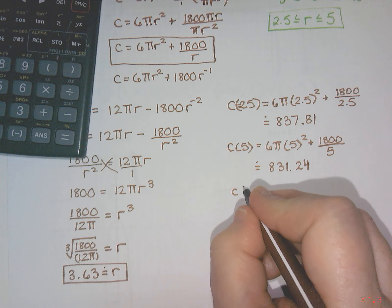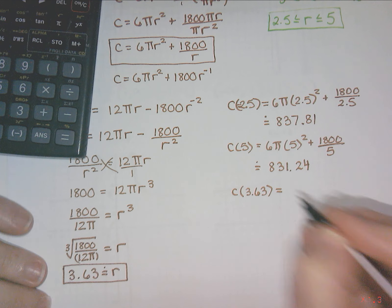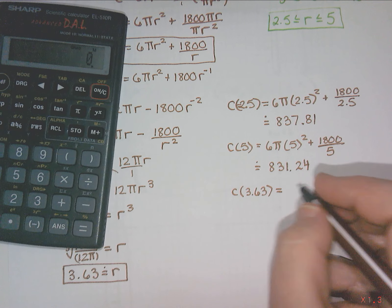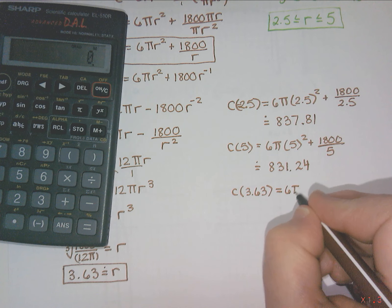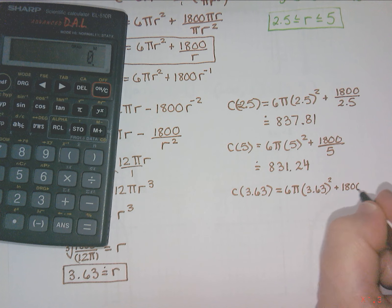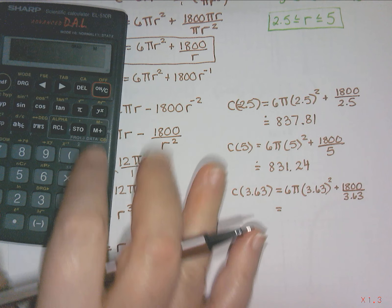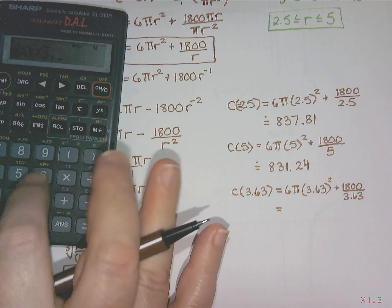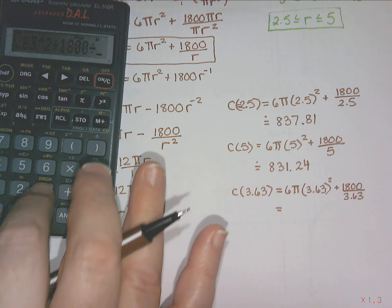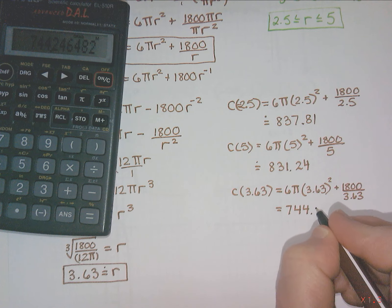And then our last one. I might get a slightly more accurate answer if I used the cube root of 1800 over 12 pi, but I am just going to use the decimal for now. And I got $744.25.